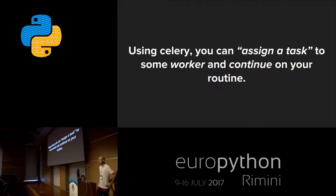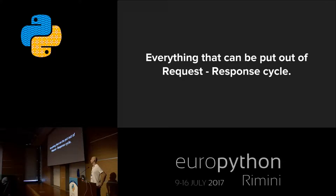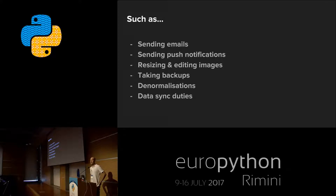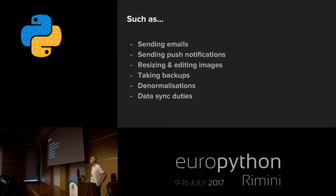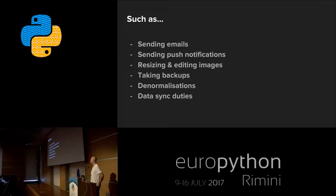Using Celery, you can assign a task to some worker and continue on your main thread. We'll get into details about what a worker is and what a task is. Generally, you can put everything that can be taken out of the request-response cycle. What can this be? Anything heavy — for example, sending emails, which can take up to three seconds or more. Or sending push notifications — imagine sending 100 push notifications to different people as a result of one action. Resizing and editing images are always a pain, especially with high-resolution images and third-party storage like S3, and they are the most common cause of 502 errors. There are also tasks like taking backups, denormalization, and data sync with third-party integrations.